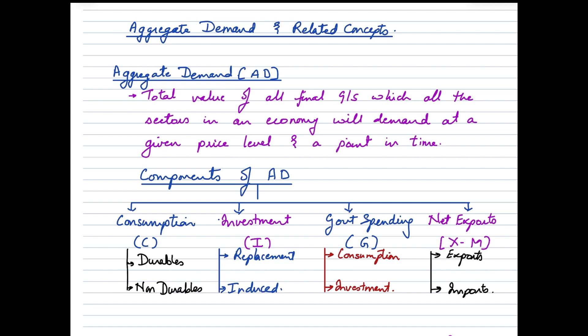Government spending also has two components to it. We have consumption spending and investment spending. So consumption spending is basically where government would be providing goods and services to meet the needs of people. Say for example, spending on health care, education, maintenance of law and order, defense, so on and so forth. Investment expenditure on the other hand would be spending incurred by government on construction of roads, railways, highways, airports, ports, so on and so forth.